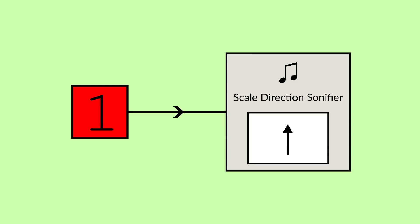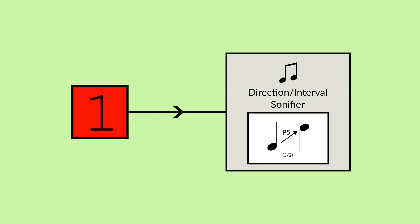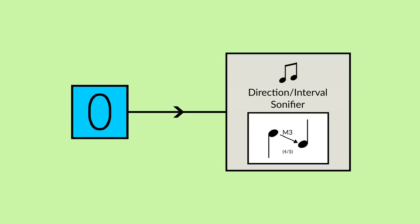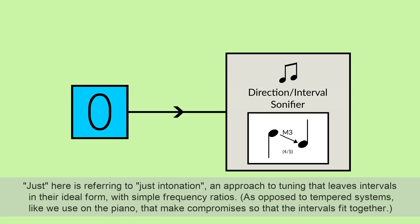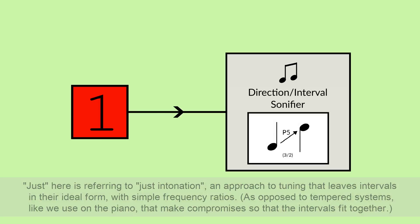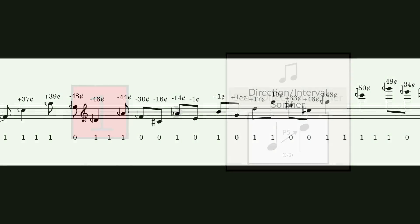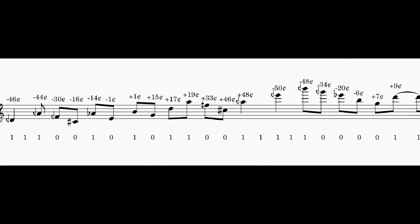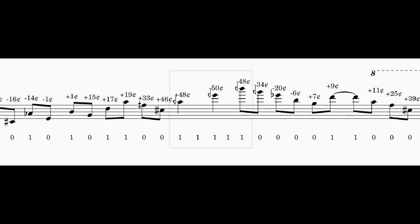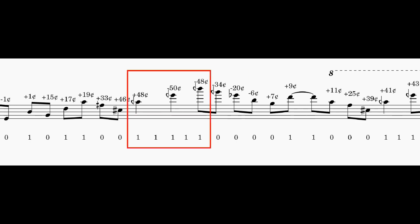I actually found a variant of this which produced a kind of interesting result. Ones cause the melody to rise by just perfect fifths, and zeros cause it to fall by just major thirds. Because these intervals aren't tempered, the tuning drifts over time. Also, since fifths are larger than thirds, I made it so that it doesn't rise for every single value of one.